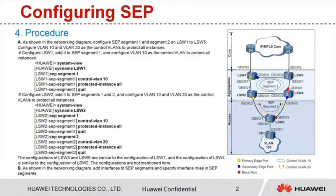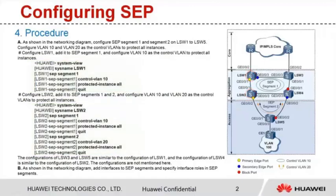Now let's move to the configuration procedure. Step A, as shown in the networking diagram, configure basic SEP functions. LSW1 and LSW2 are used as an example. Configure an SEP segment, then control the VLAN and protection instances. The configurations of LSW3 and LSW5 are similar to the configuration of LSW1.